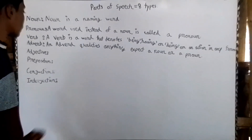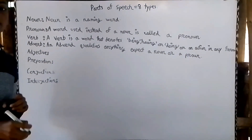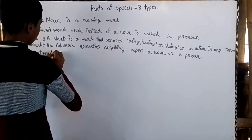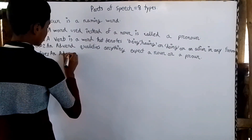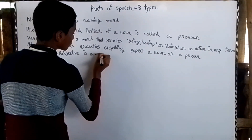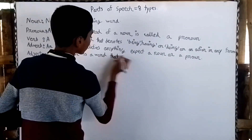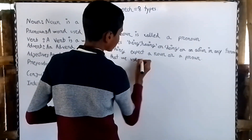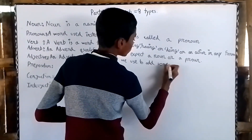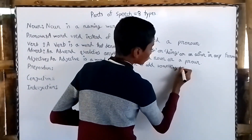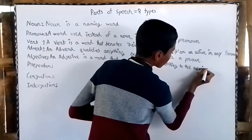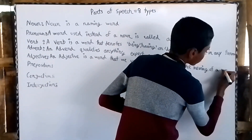What's an adjective? An adjective is a word that we use to add something to the meaning of a noun.